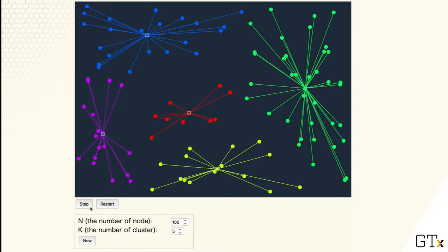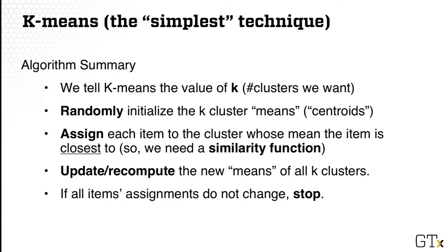The assignment is easy to understand, and the algorithm itself is very conceptually simple. To summarize: we first tell k-means the number of clusters we want, then it randomly initializes the cluster centers or means, assigns each item to the cluster whose mean is closest, recomputes the new means of all clusters, and keeps repeating until the assignments no longer change.